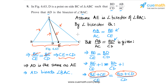The first approach required a construction similar to the one used for the angle bisector theorem, while the second approach did not require a construction and depended on applying the angle bisector theorem directly. Both approaches are correct. On an exam you can choose either — personally I prefer the first approach because the construction is interesting, but the second is equally accurate. This completes question number nine.